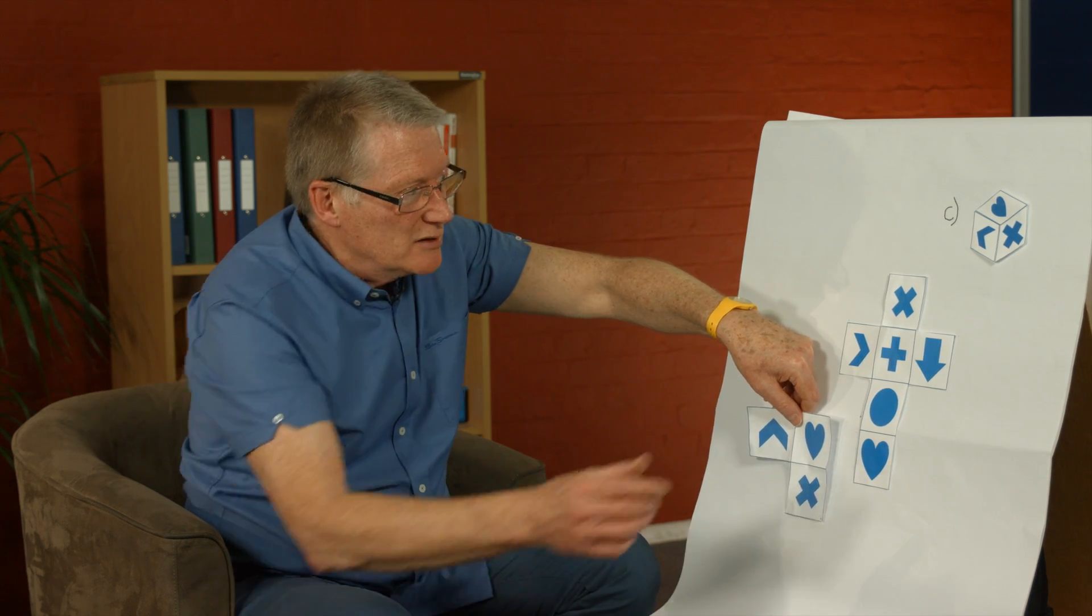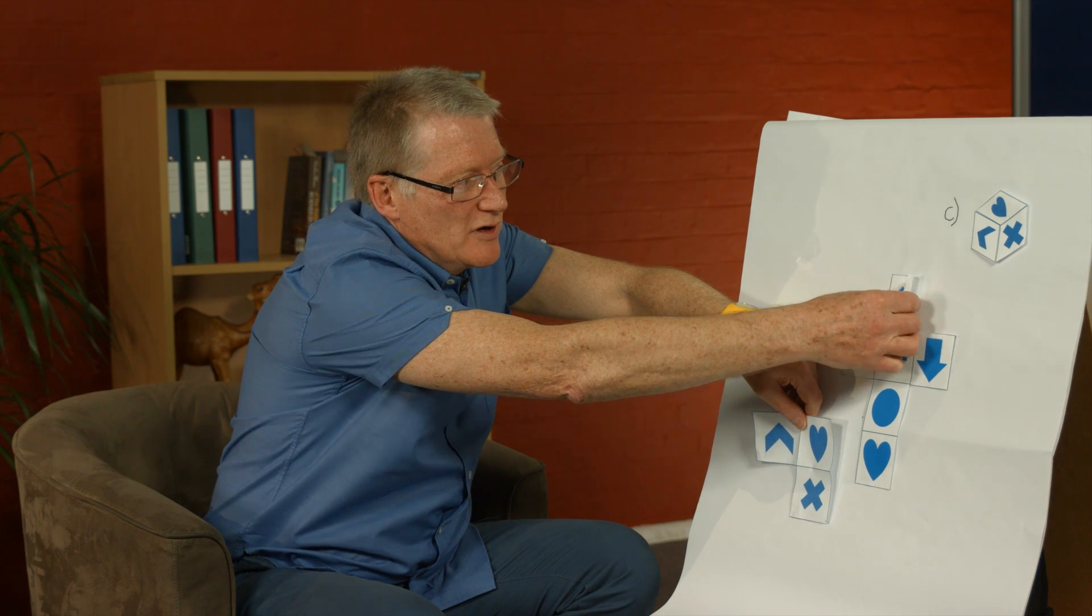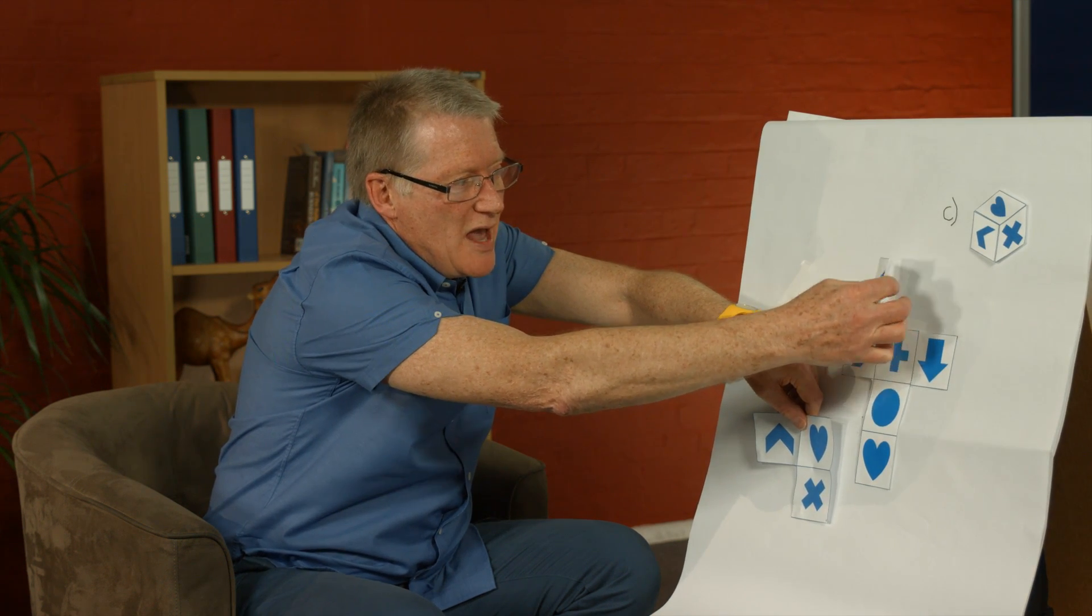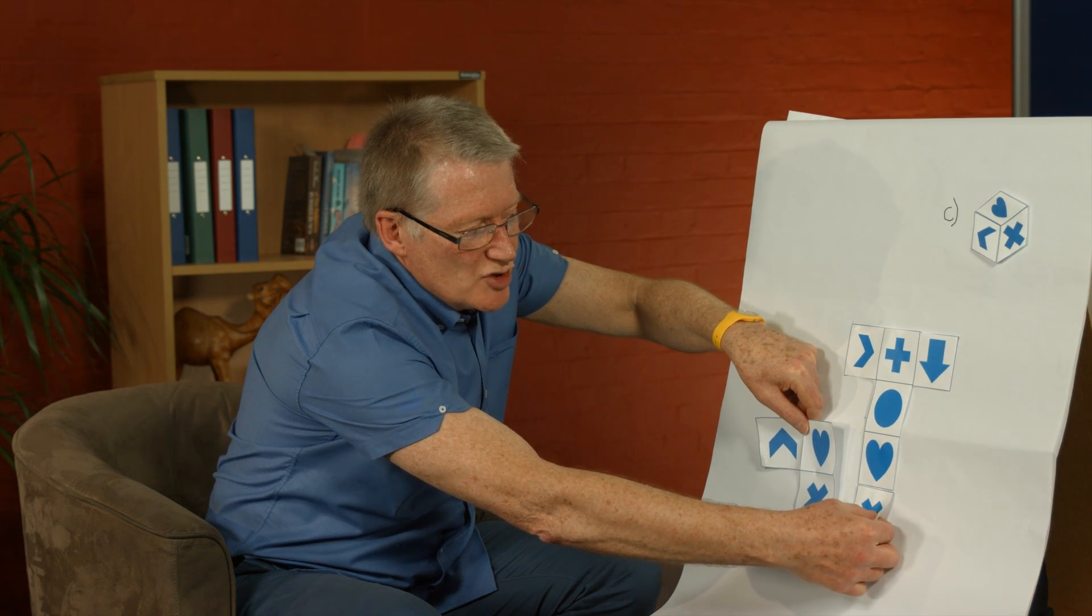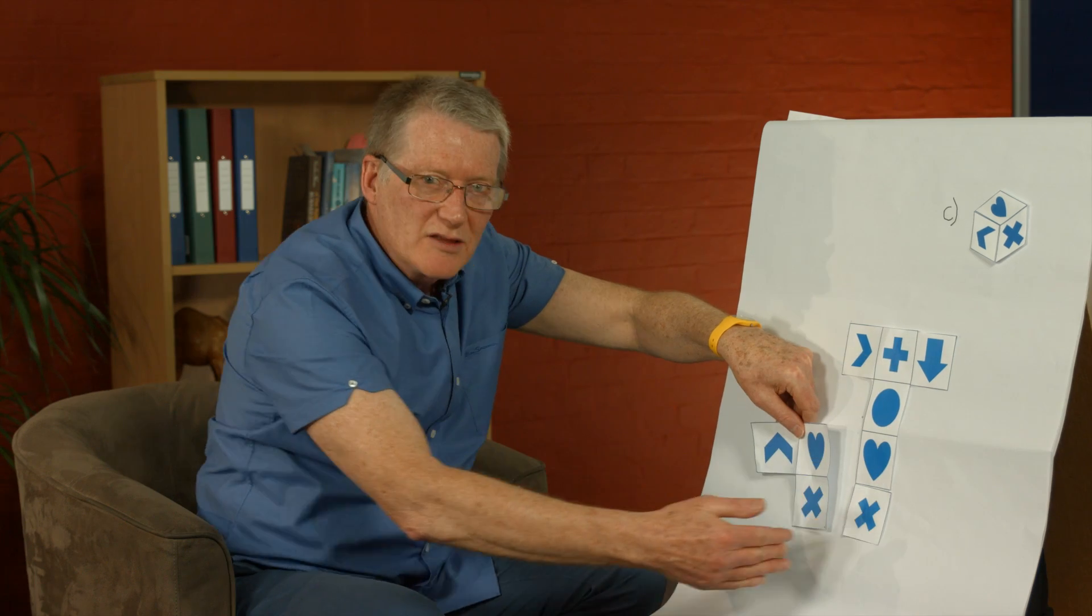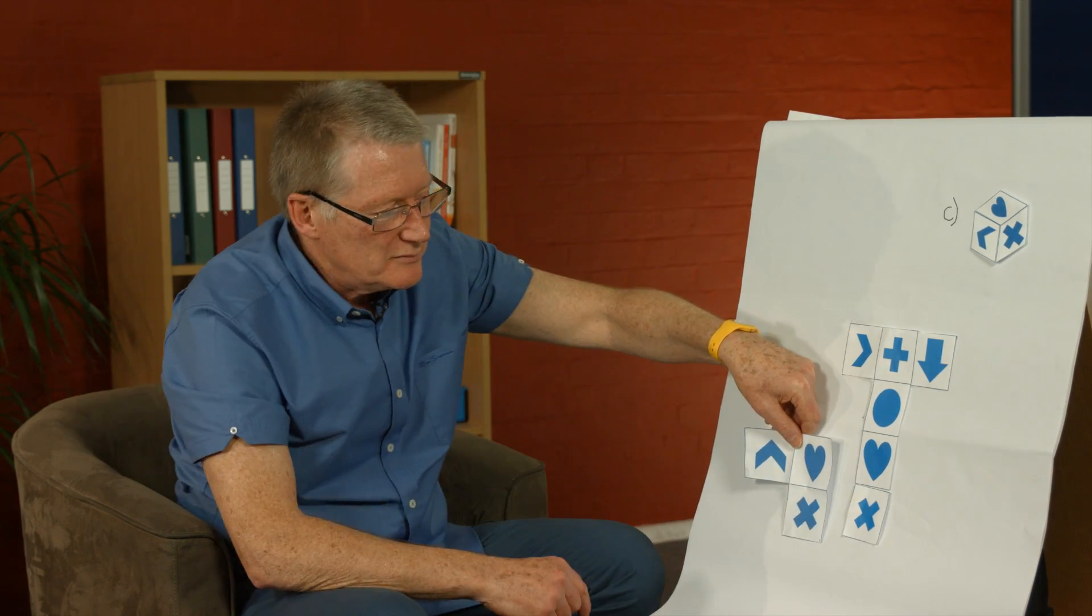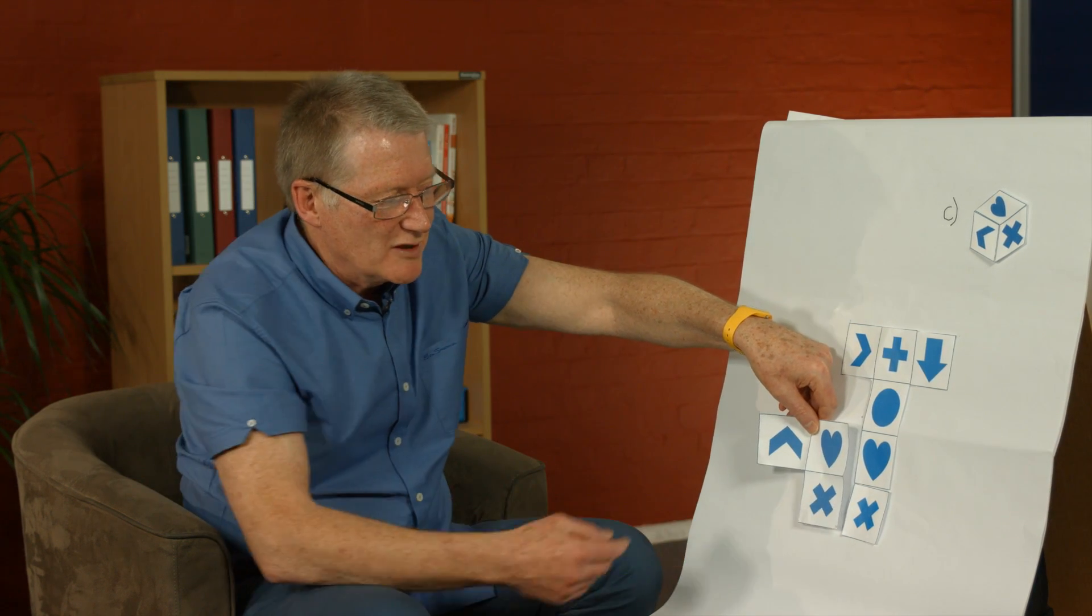A trick you can do here is you can move any of the middle ones to the position you want, as long as they stay in the right order, the wrapped order. So now that's much better, isn't it? We can see heart and multiply sign.